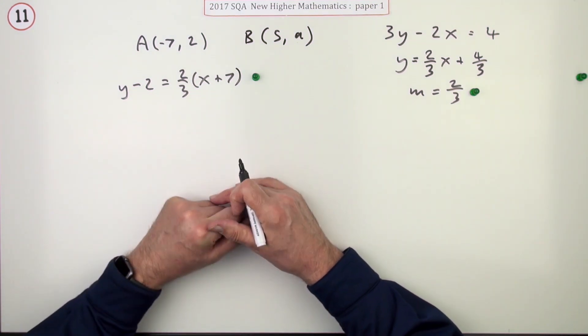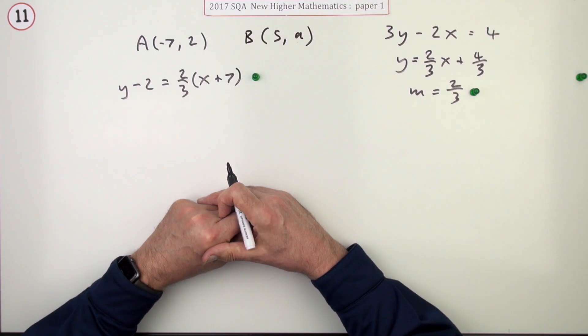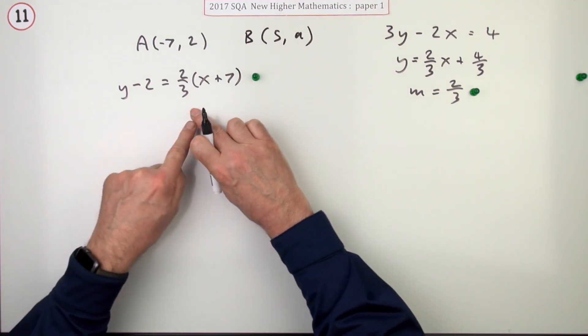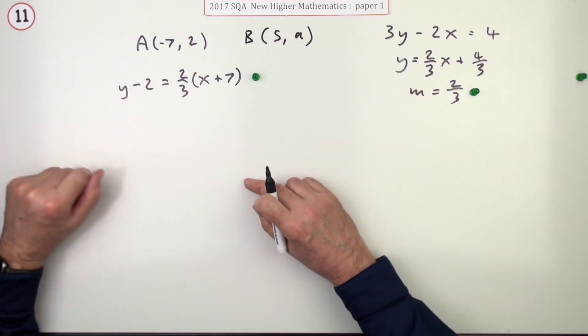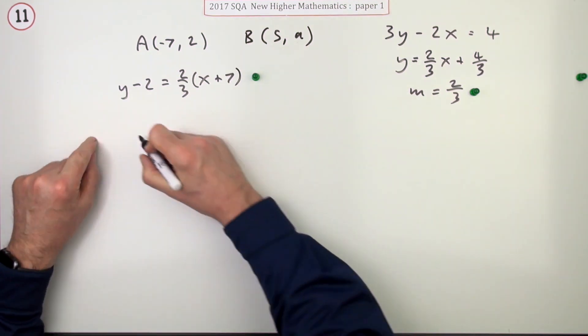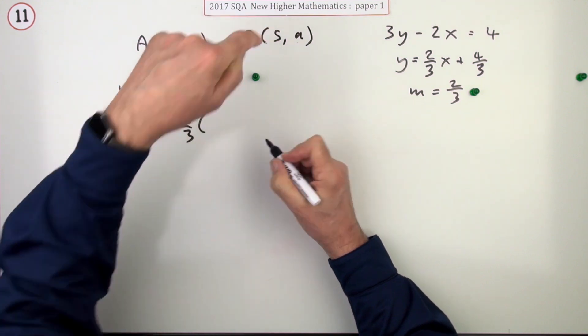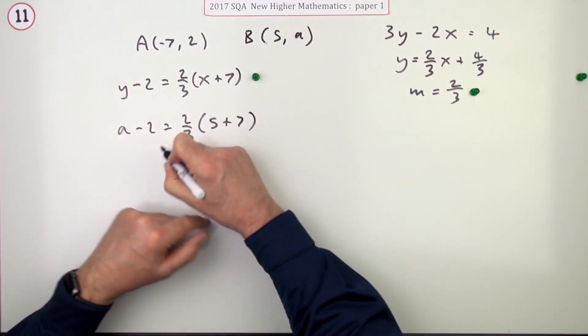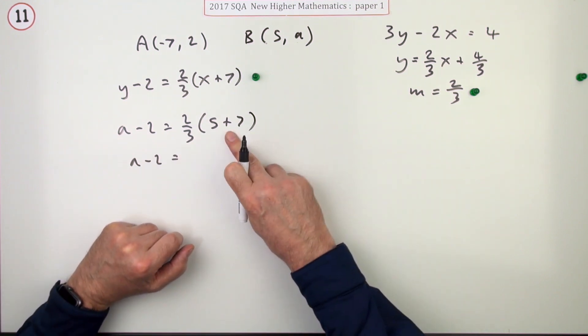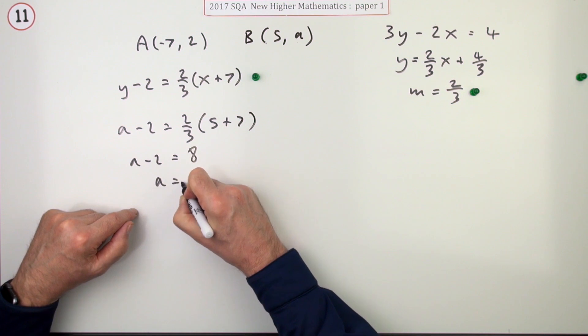Notice I've not tidied it up because it didn't explicitly ask me for that equation. And then finally, if this point lies on that line - because that's the equation of the line through A parallel to it - then putting 5 and a into this, so a is the y-coordinate, you've got a minus 2 is 2/3 of 5 plus 7. It's the same exact calculation: a minus 2 is 24 over 3, 8, a equals 10, as before.